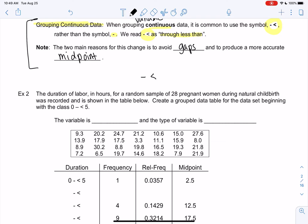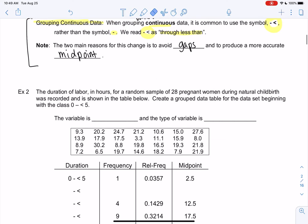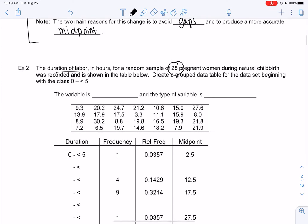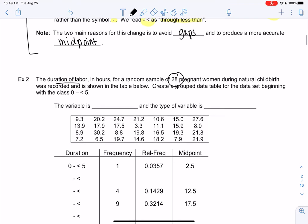Let me show you with the example. If we look at duration of labor for having a baby in hours, we have 28 pregnant women in our sample and we recorded how long their labor was. We're going to make a grouped data table.